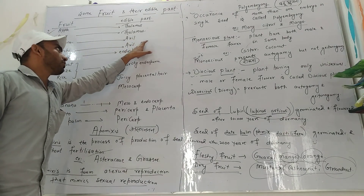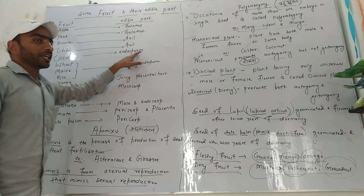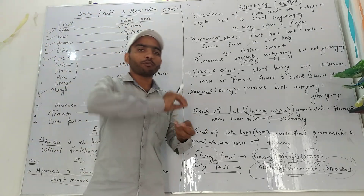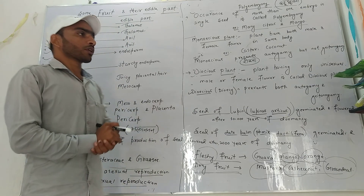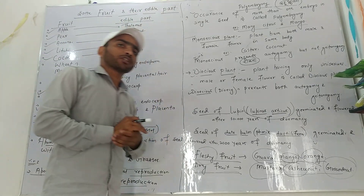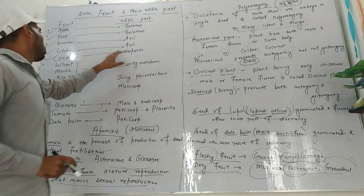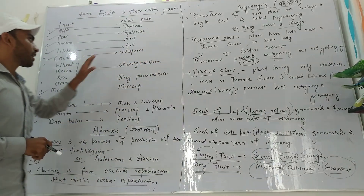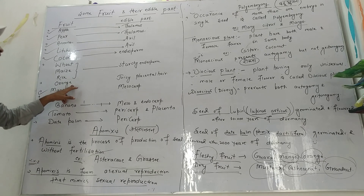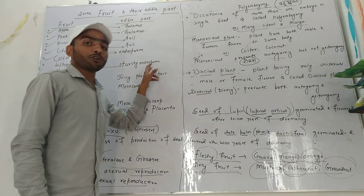This is the pericarp of a fruit, and the orange can be eaten. In wheat, rice, and orange — what do you eat? The endosperm.